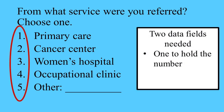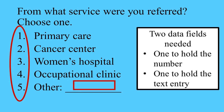You actually need two data fields for this item if you want to include the other choice. The first data field is to hold the number they choose. If they choose primary care, that number is 1. But if they choose other, that number is 5. Then you also have to include another field to hold the text entry for the other choice. If they choose 1 — primary care — then this field will be blank. In fact, most people will probably choose one of the choices that's not other, so most of these fields will be blank.